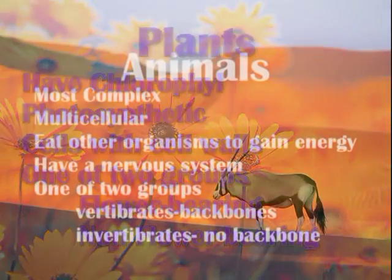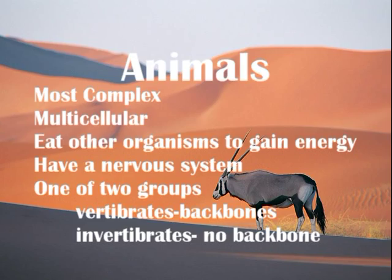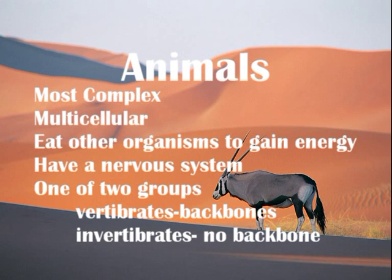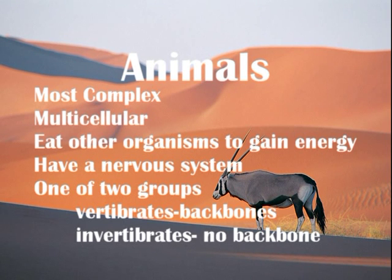Animals are the most complex organisms within the biosphere of Earth. They are multicellular and eat other organisms to survive. They have nervous systems and are split into two groups: vertebrates and invertebrates.